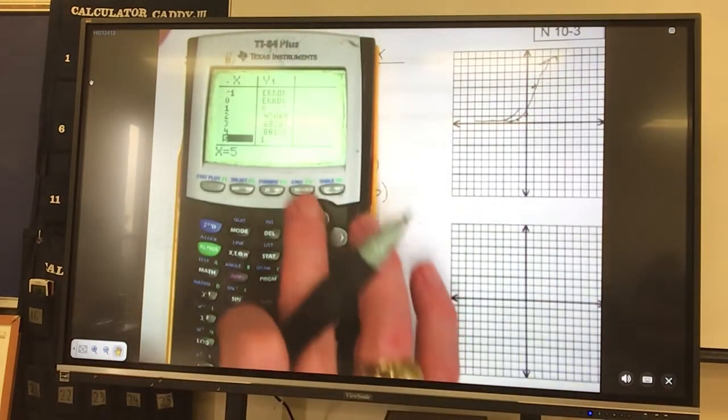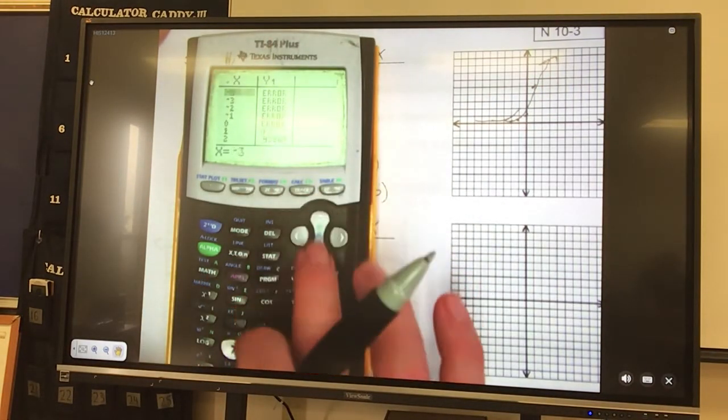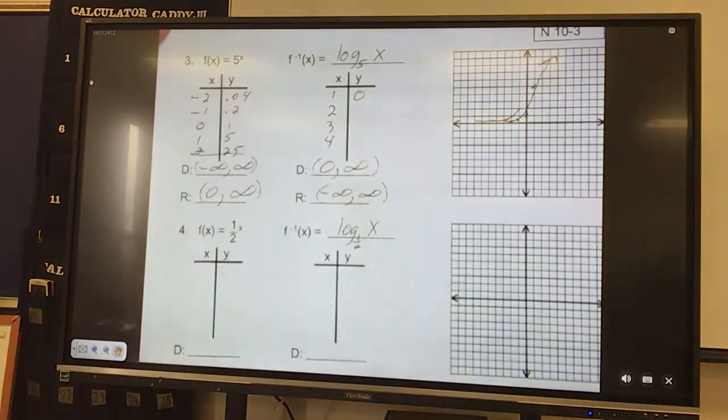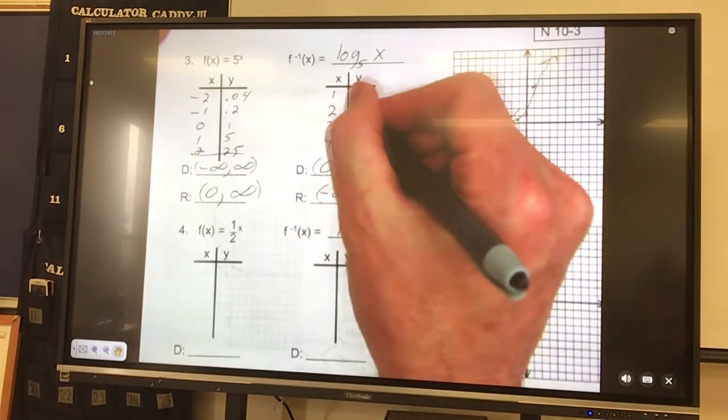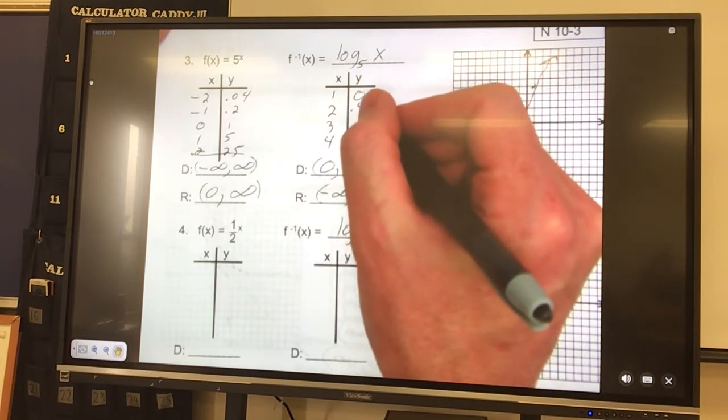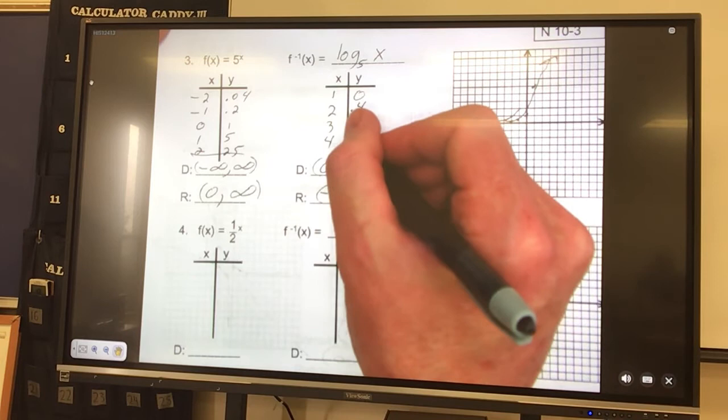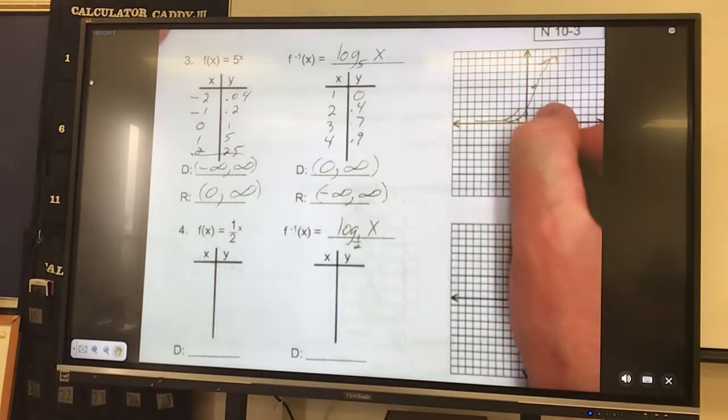Logs are easy to graph because you can see the errors. That's not where we want to start. The first one is not errors. 2 would be 0.4, 3 is 0.7, and 4 would be 0.9.